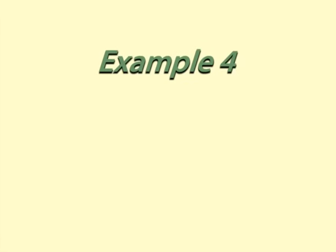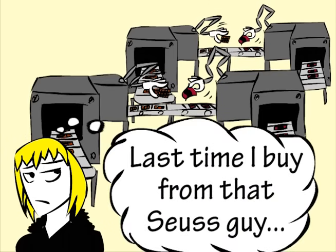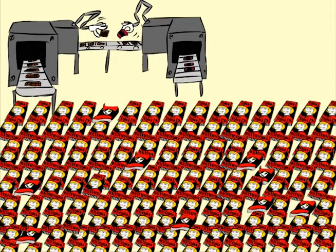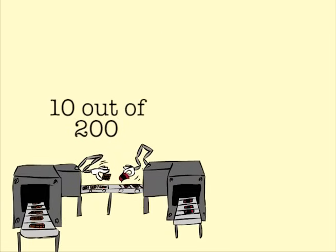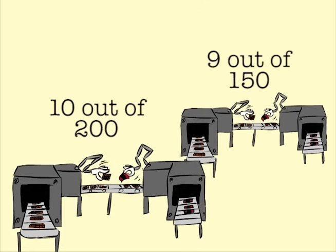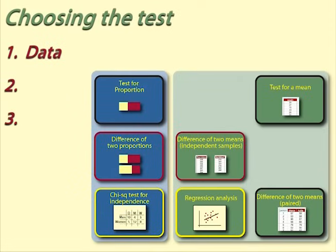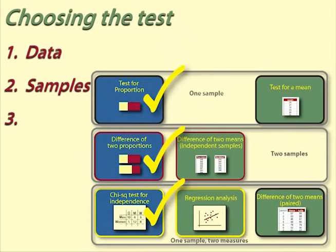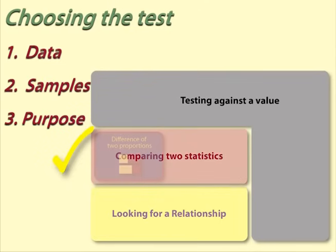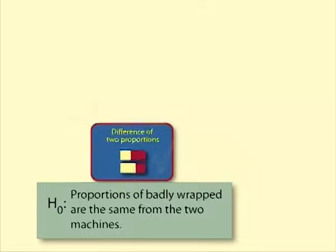Example 4: Defective wrapping from two wrapping machines. Helen thinks there is a difference in performance between the two choconutty wrapping machines in her factory. She checks 200 bars from one machine and 150 bars from the other, seeing if the wrapping is satisfactory or not. She finds 10 out of 200 bars from the first machine and 9 out of 150 bars from the second machine are badly wrapped. Data: okay or not okay — this is nominal data summarised as frequencies. Samples: two independent samples, one from each machine. Purpose: comparing proportions from two samples. The test is difference of two proportions.